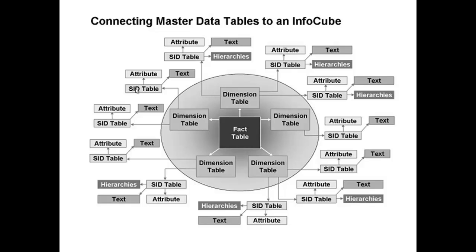SID stands for master data ID, or surrogate ID. In the master data bearing characteristic info object, these keys are given the prefix SID underscore. For example, for a cost center it would be SID_cost_center, which is the SID key for the characteristic cost center. The dimension table has a generated numerical primary key called the dimension key, denoted with the prefix DIM_ID_. For example, DIM_ID_cost_center is the dimension key for the cost center dimension.